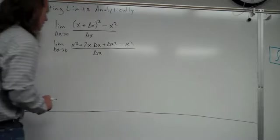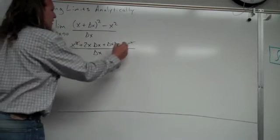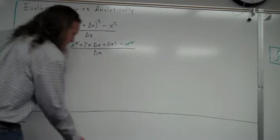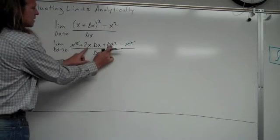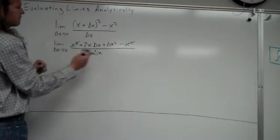Okay. Then, I notice I have my x squareds that cancel out right there. That's good stuff. And, I also notice that in the terms that I have left on the top, these two, they both have a delta x in them. So, what I can do is I can factor that out.